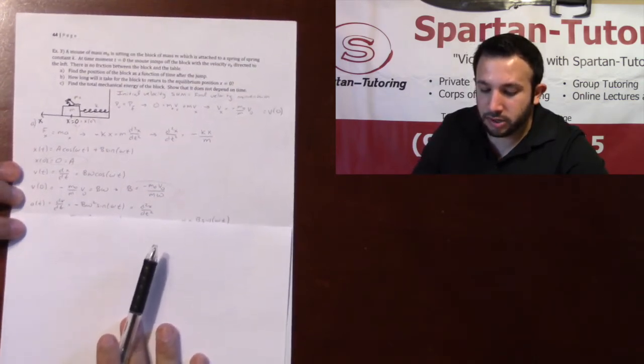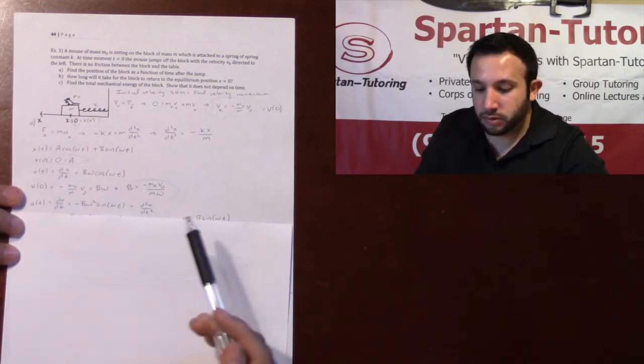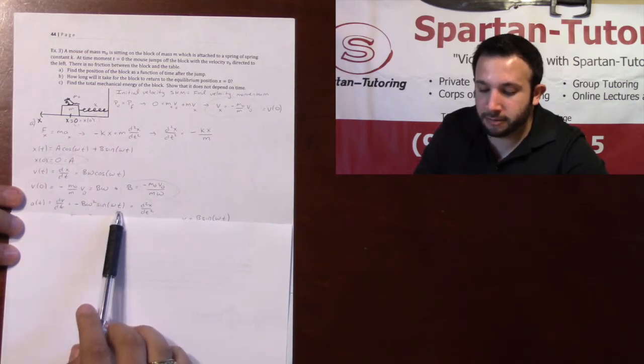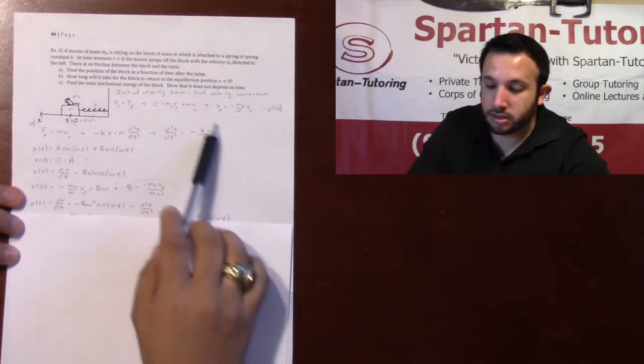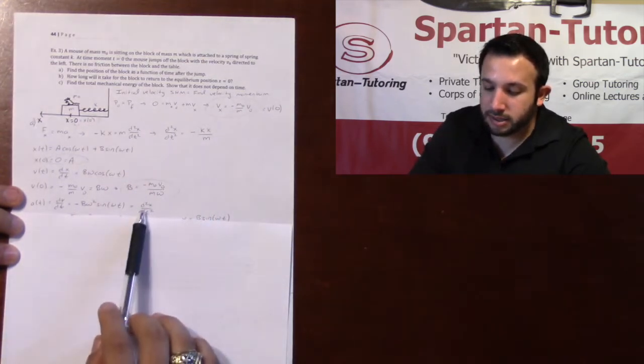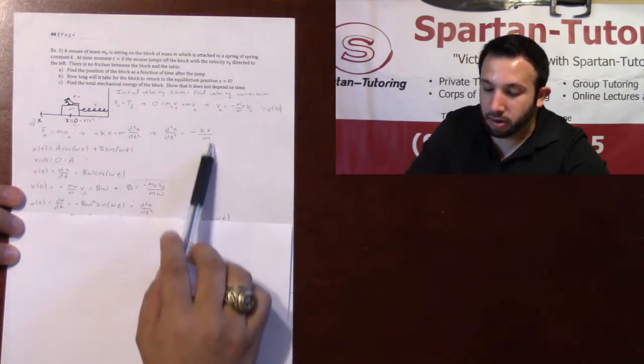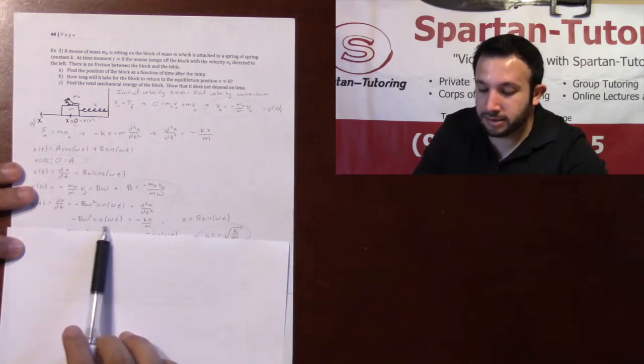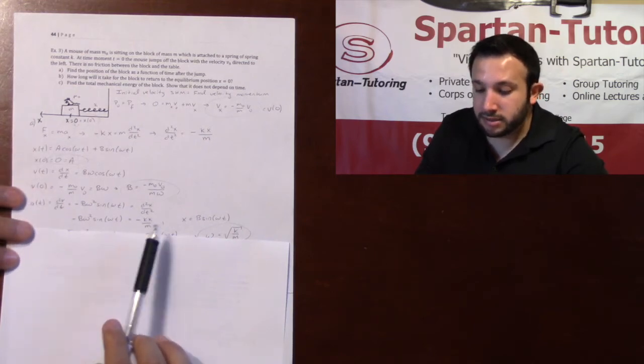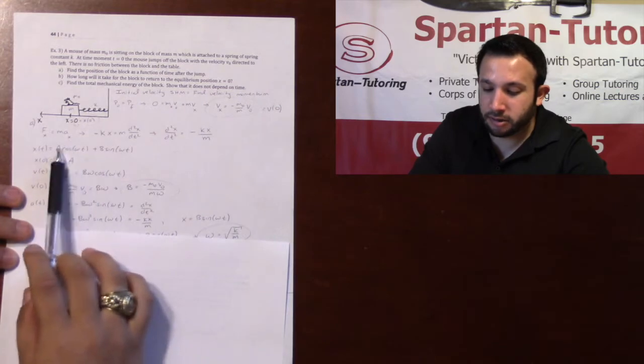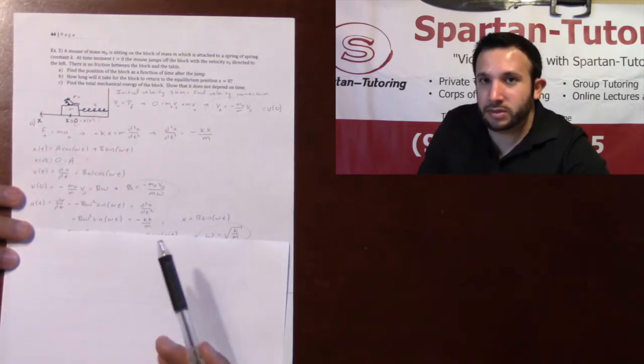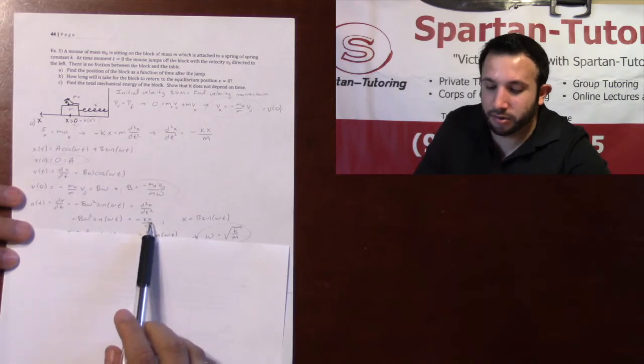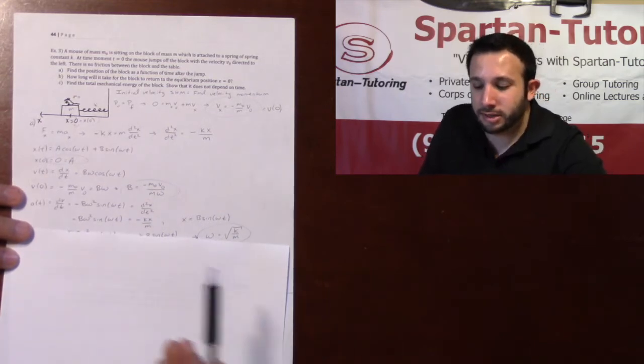Finally, acceleration is simply the derivative of velocity with respect to t. So taking the derivative of velocity, that's negative b omega squared sin omega t, which of course is our second derivative of position. At zero, x is zero. So I got zero equals zero. Congratulations. It doesn't tell me anything.